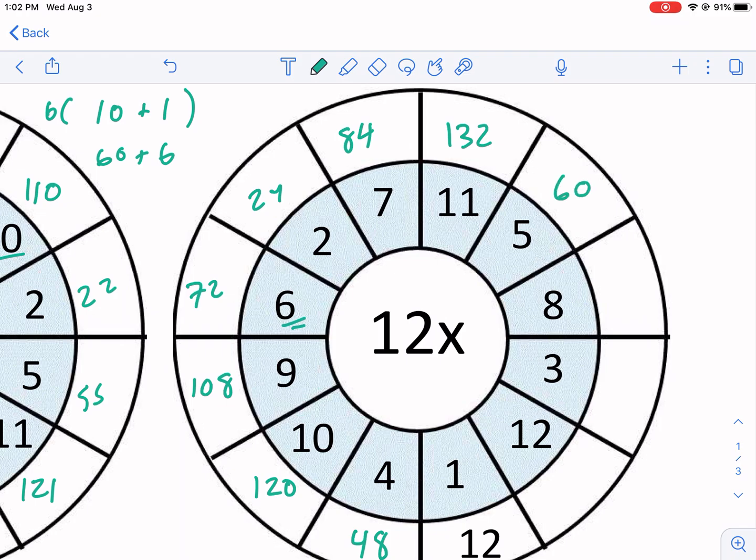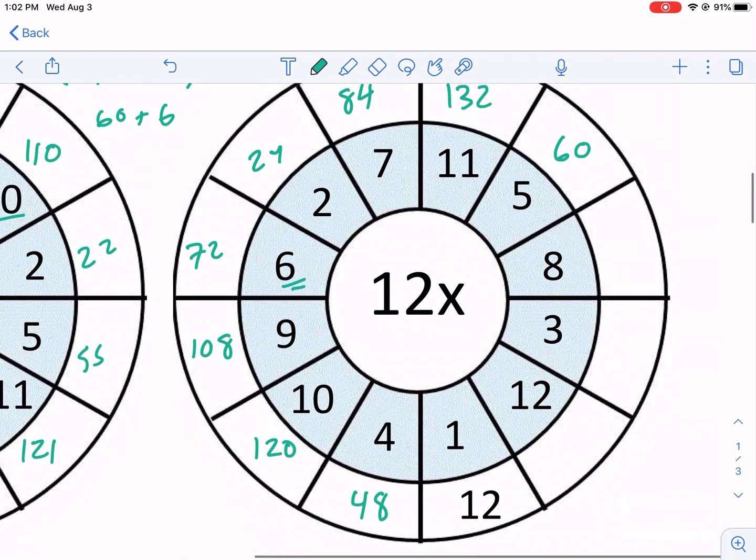12 times 5 is 60. A way to think about that is there's 60 seconds on the clock, and there's 12 second increments, you could have 5 of them. 12 times 8, we have 96.